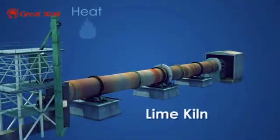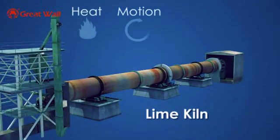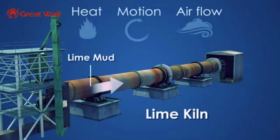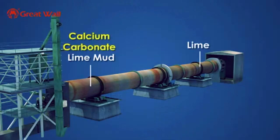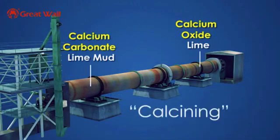A lime kiln uses heat, motion, and air flow to convert lime mud to lime, or in chemical terms, calcium carbonate to calcium oxide. This process is referred to as calcining.